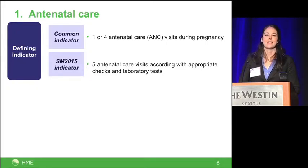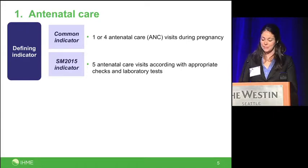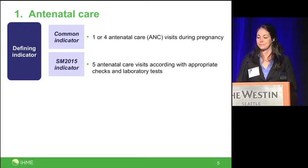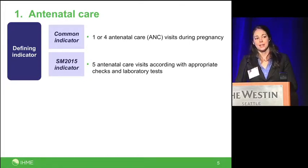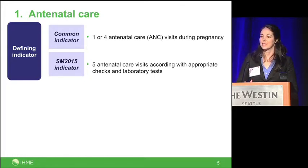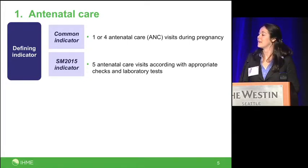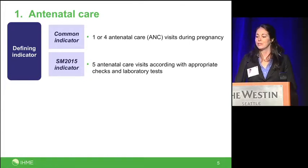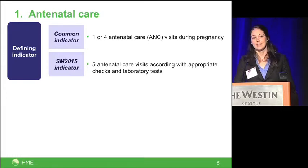The first indicator I'll discuss is antenatal care. Antenatal care is most commonly measured as the proportion of women receiving one or four visits during their pregnancy — a very basic measure. An ideal measure of effective coverage would incorporate not only visits but the content and quality of those visits, and ultimately the health outcomes. Towards this end, we collaborated with the Inter-American Development Bank and the Mexican Ministry of Health to define a list of best practices that should be included in the content of antenatal care.